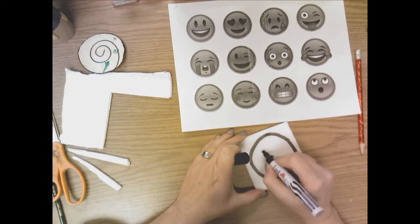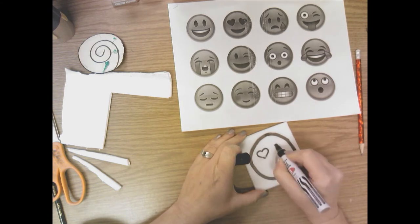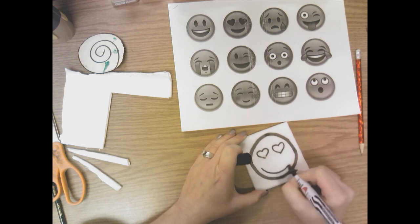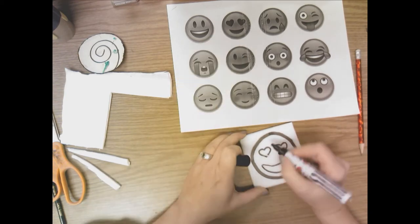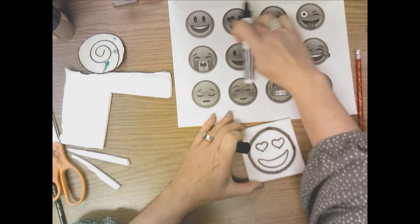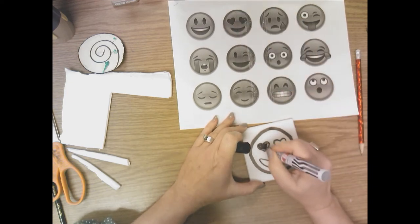So I'm going to, with my marker, draw two eyes and then the smile. It may not be perfect, but it's close enough. And then I'm going to color this in because if you look at this image, the eyes and the mouth are black. So I'm coloring this in.